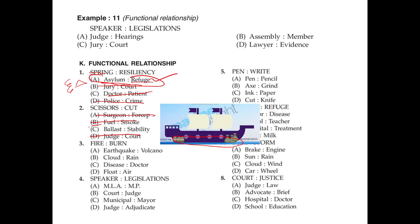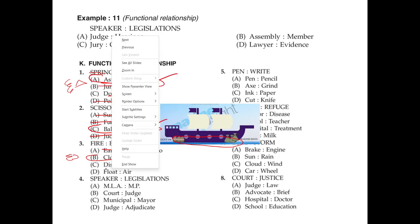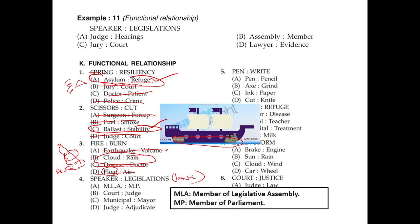Fire and burn: the function of fire is to burn. Earthquake and volcano have no functional relationship. Cloud functions to give out rain, so that could be the right answer. However, for doctor and disease, the sequence is not right — first we need the doctor, and then he treats the disease. MLA means a Member of Legislative Assembly, MP means Member of Parliament, so that has nothing to do with a functional relationship.